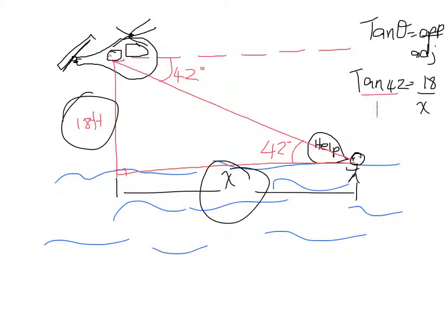Now we can go ahead, put this over 1, and cross multiply, and we get that 18 is equal to x tan of 42. So we're trying to isolate that x so we can divide both sides by tan 42.